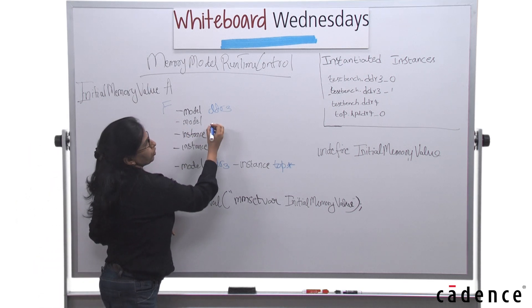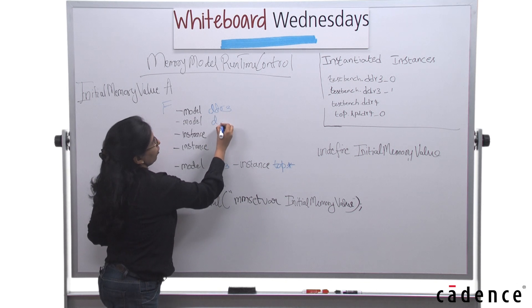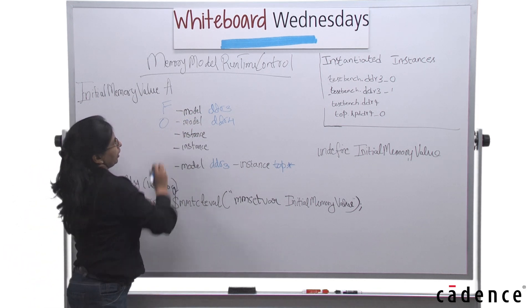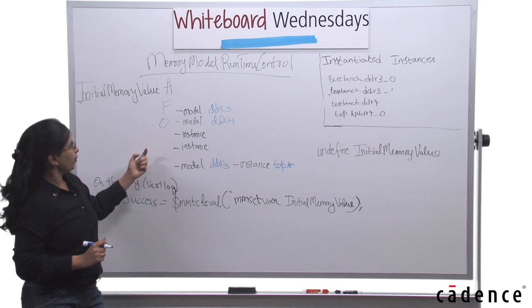Similarly, I could say model ddr4. So this means now it's going to change the value to, let's say, 0 for ddr4.